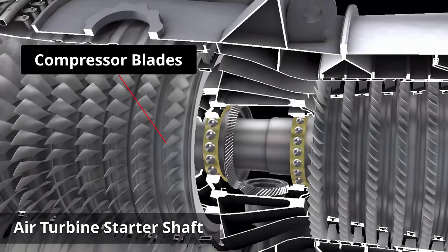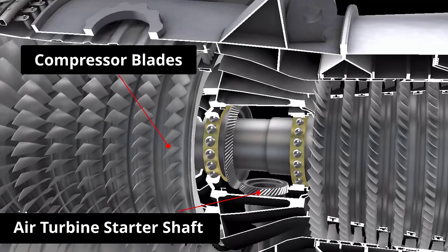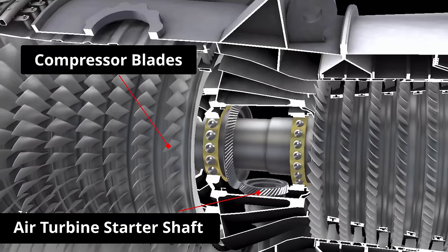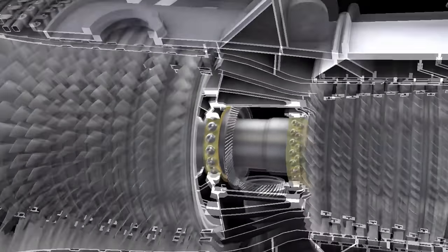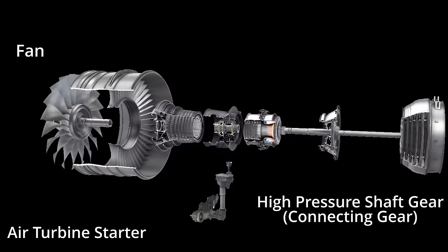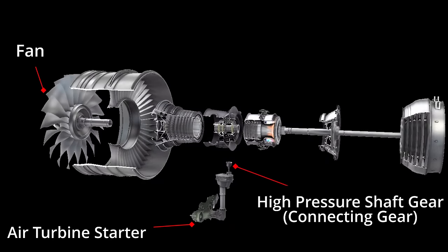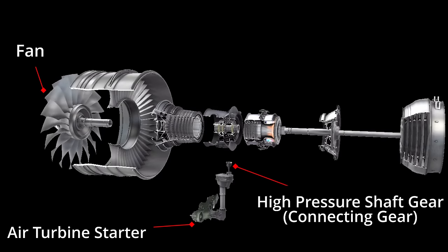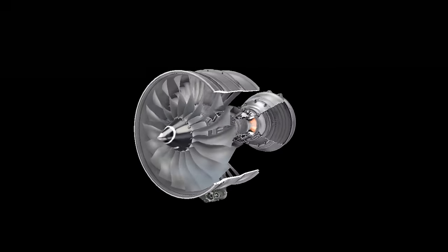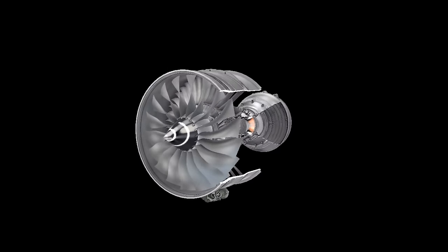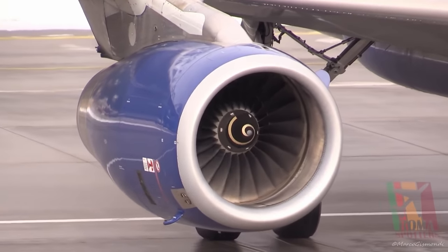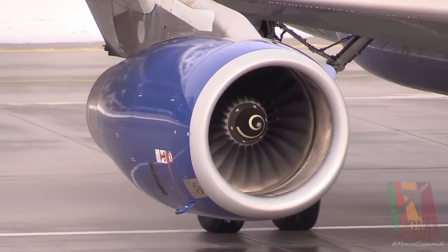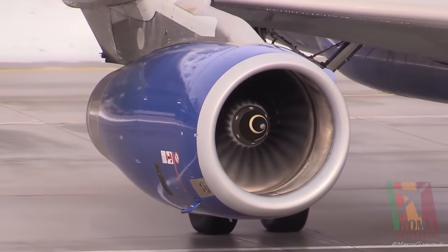Turning this shaft rotates the engine's compressor blades, which draws air in through the engine and begins the compression process. As air is drawn through the engine, the large fan at the front begins to rotate. The air turbine starter continues to put energy into the system until the required engine speed is reached, usually about 20% of the engine's maximum RPM.